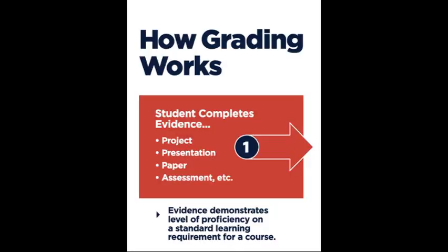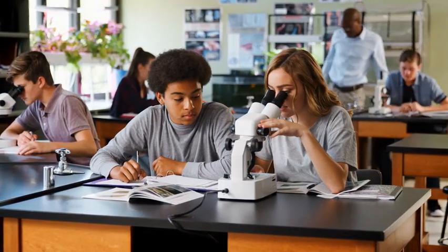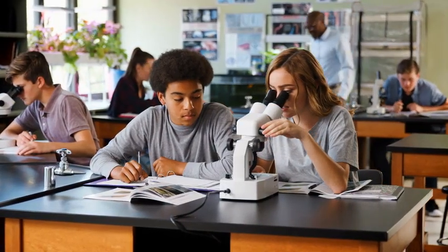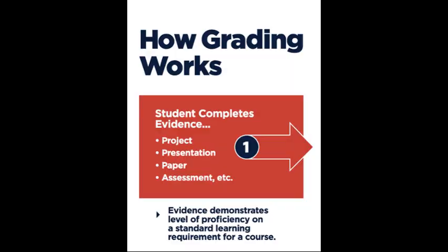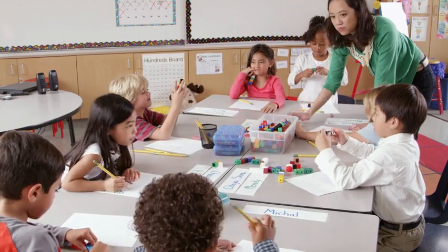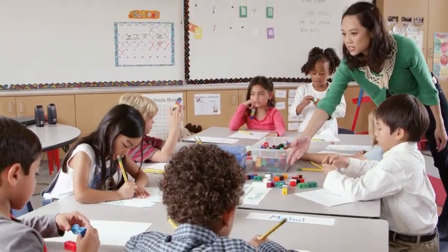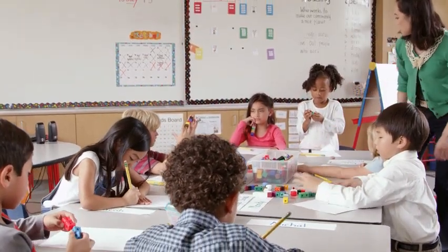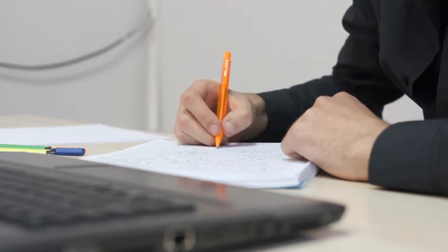For example, a teacher may assign the class a project as part of a classroom learning cycle. The project may provide evidence for three learning requirements. Each learning requirement has its own set of skills or criteria. Teachers help students learn each of the skills within a learning requirement. Students then demonstrate their learning of those skills by completing work, also referred to as evidence, for the project.